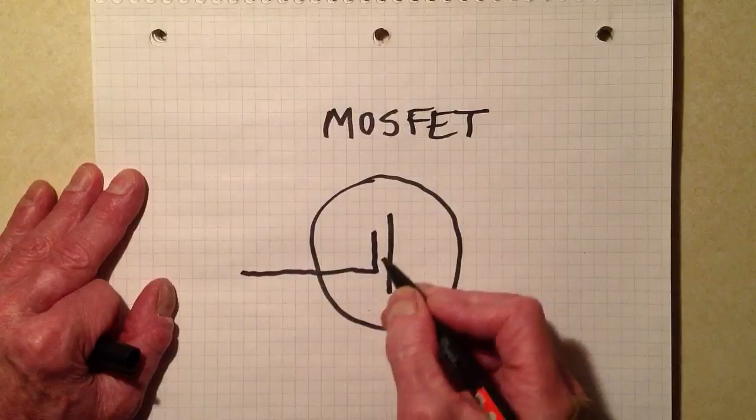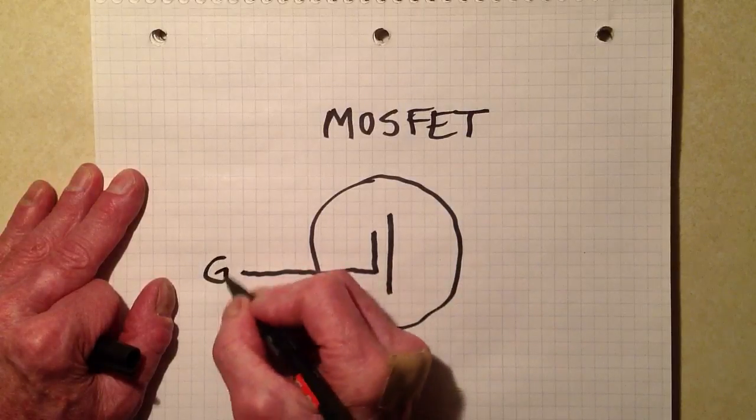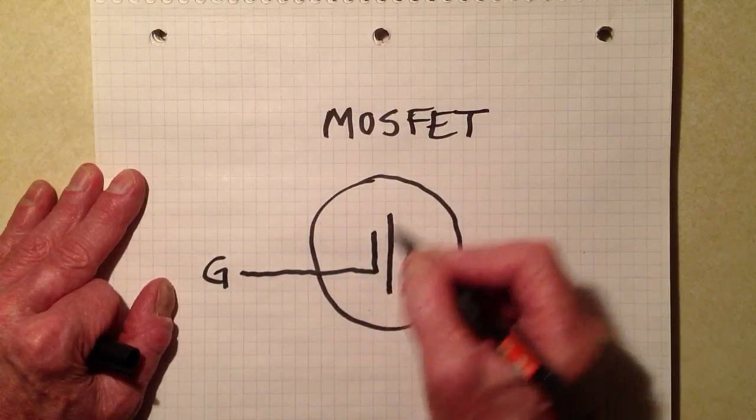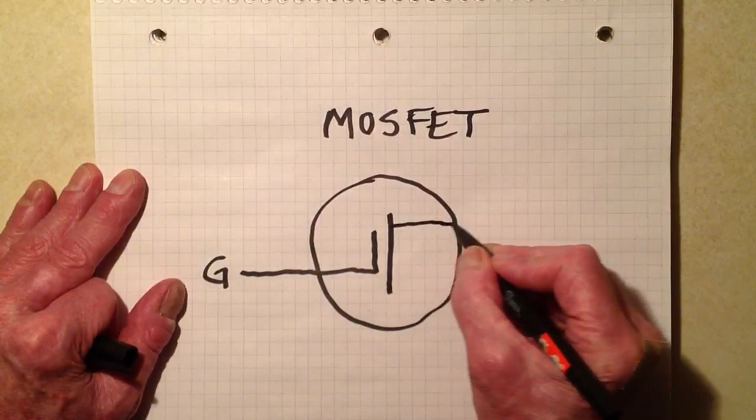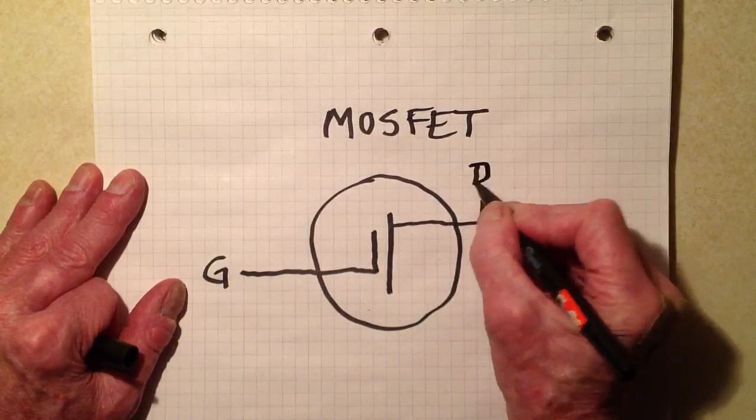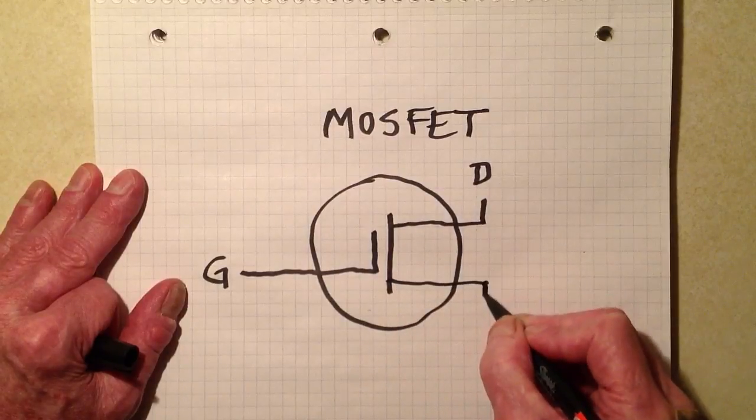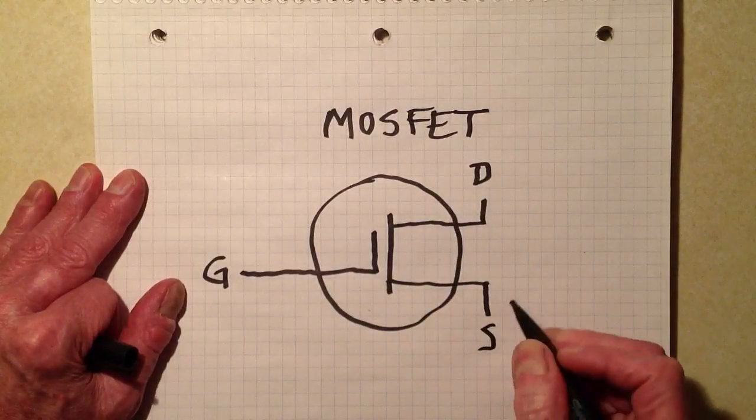This is how we indicate the gate in a metal oxide semiconductor field effect transistor. Here is the drain. Here is the source.